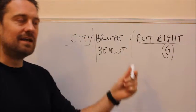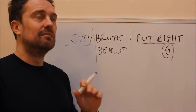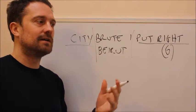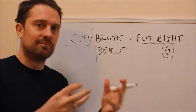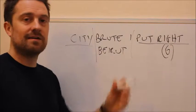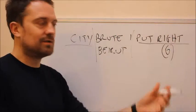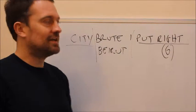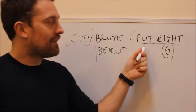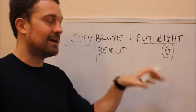Now the anagram indicator can be any number of things — a really vast range. Anything that indicates change, movement, distortion, or confusion. So you'll see words like 'scrambled', which is a really obvious one, but also words like 'frenzied' or 'frantic', meaning the words are all kind of bubbling up in a mess. Or 'new' — 'renewal' is another one — so the word 'new' means a new version of something. So 'city brute I renewed' would do exactly the same thing. 'City brute I altered', 'city brute I changed', 'city brute I found in confusion' — any word that indicates a change of state or a distortion of any kind could go there and do exactly the same job.